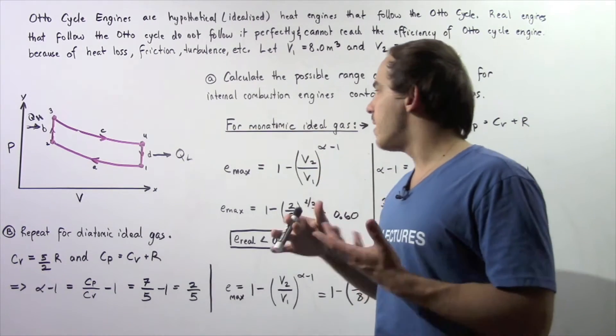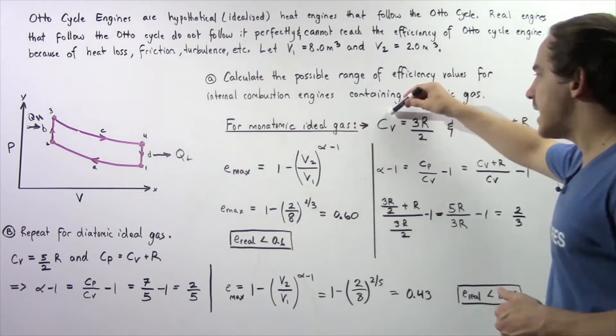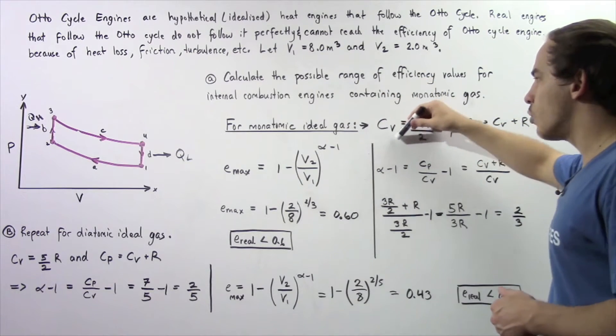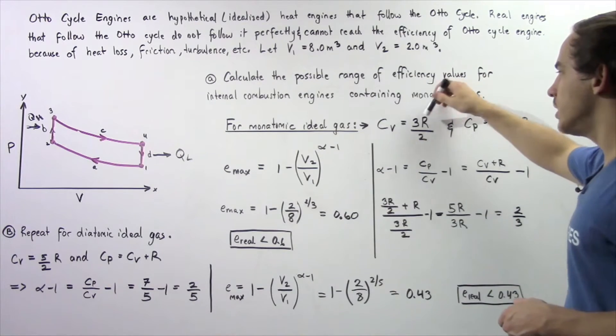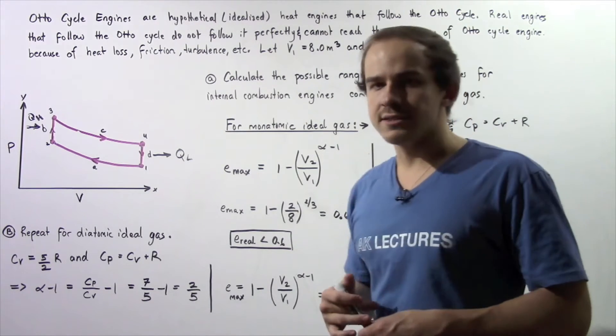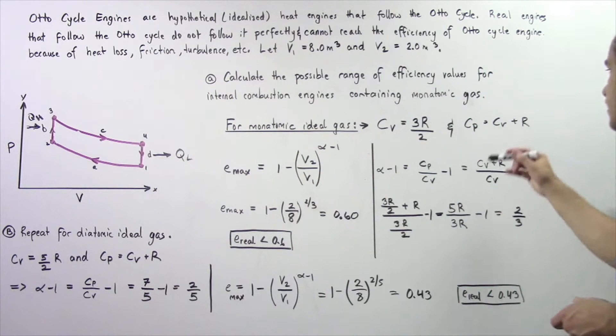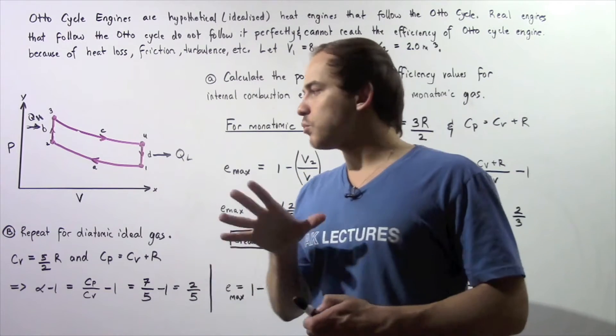Now because we're dealing with a monatomic ideal gas that basically means that the molar specific heat for an isovolumetric process is equal to 3R divided by 2 where R is the universal gas constant. And recall that Cv plus R the universal gas constant is equal to Cp where Cp is simply the molar specific heat when the pressure is constant.